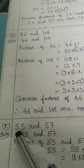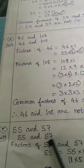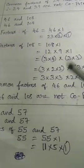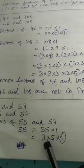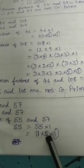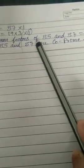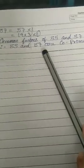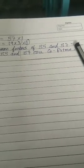Next, last one is E: 55 and 57. Write the given numbers. Factors of 55: 55 equals 1 × 55. 55 is written as 11 × 5 × 1. Next, 57: 1 × 57. 57 will come in 19 tables — 19 × 3 = 57 — so 57 is written as 19 × 3 × 1. Common factors: in 55 and 57, only 1 is common. Therefore, 55 and 57 are co-prime because only 1 is the common factor.